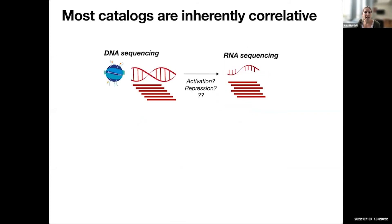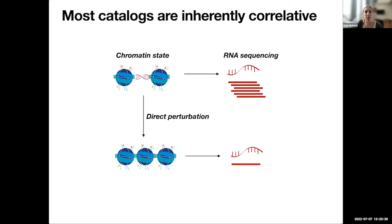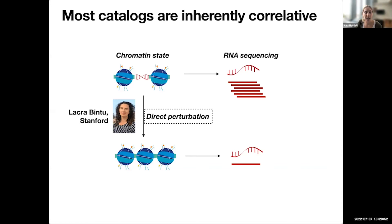Finally, as I alluded to earlier, most catalogs are inherently correlative. They correlate the presence or absence of a given epigenetic mark with changes in gene expression using RNA sequencing, which makes teasing out cause and effect a little bit challenging. What would be really awesome is if there were more ways to directly perturb chromatin state, which would allow us to identify whether these epigenetic states themselves can cause changes in gene expression. Today we're going to hear from Lakra Bintu at Stanford, who I believe is going to tell us about what her lab is doing to develop tools to directly perturb chromatin states.